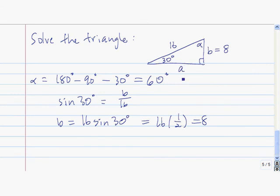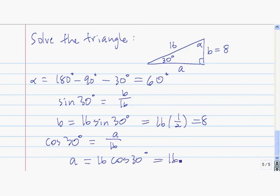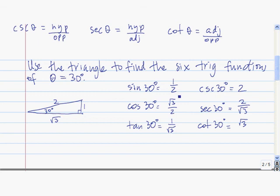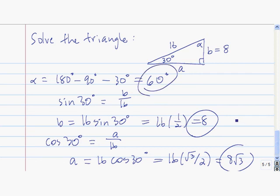Finally, I want to find the length of a. I have a couple of choices — I could use the Pythagorean theorem since I now know two sides, or I can use the fact that a is the adjacent side to 30 degrees and I know the hypotenuse, which means I use cosine. So cosine of 30 degrees equals a over 16. Multiplying both sides by 16, a equals 16 times the cosine of 30 degrees. The cosine of 30 degrees is square root of 3 over 2, so 16 times root 3 over 2 gives us 8 times root 3.